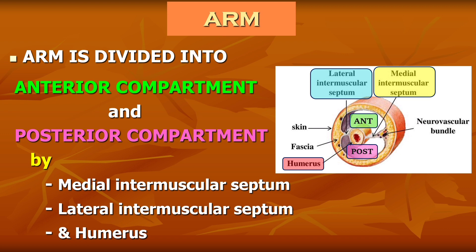The humerus is the bone of the arm, while the medial and lateral intermuscular septi are modifications of the deep fascia which are attached to the humerus. In front of the humerus and the septi we get the anterior compartment, also called the front of arm or flexor compartment. Behind the humerus and the septi we get the posterior compartment, also called the back of arm or extensor compartment. Today we are dealing with the anterior compartment of arm.